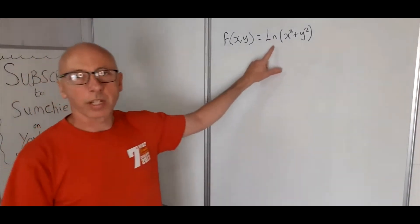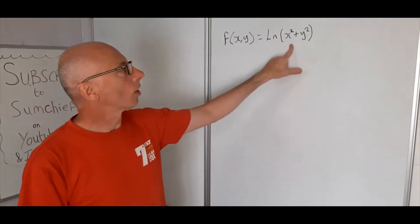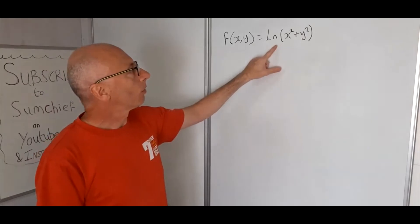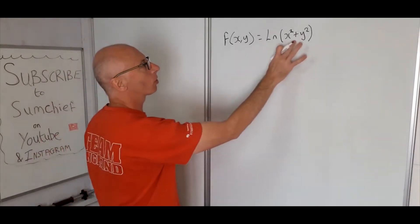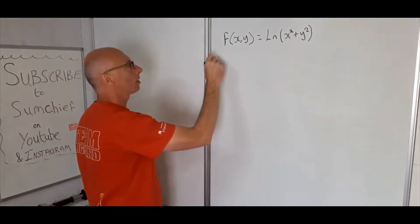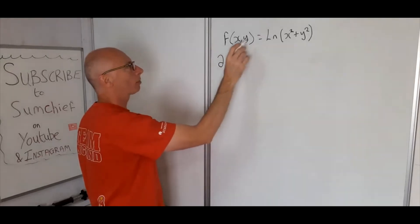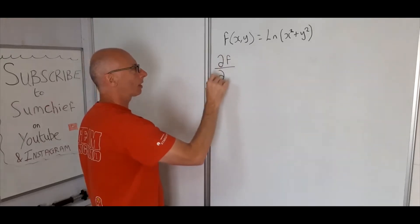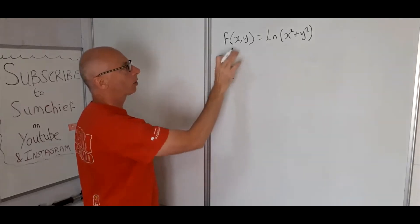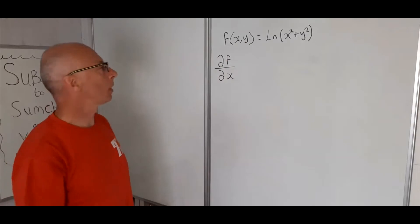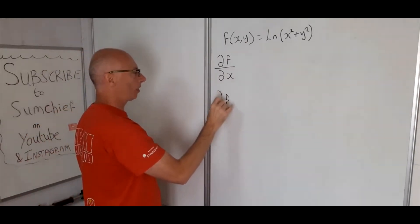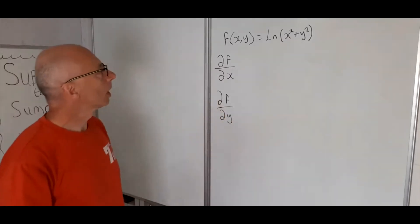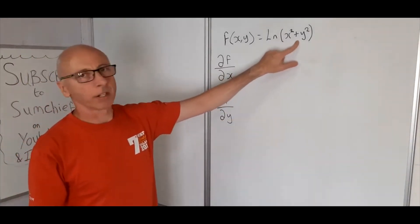We're going to take the derivative of the function log of x squared plus y squared. What we're going to find is the partial derivatives, because we've got two variables inside. So we write the partial derivative of f — that's the name of our function — with respect to x, and we're also going to find the partial derivative of f with respect to y.